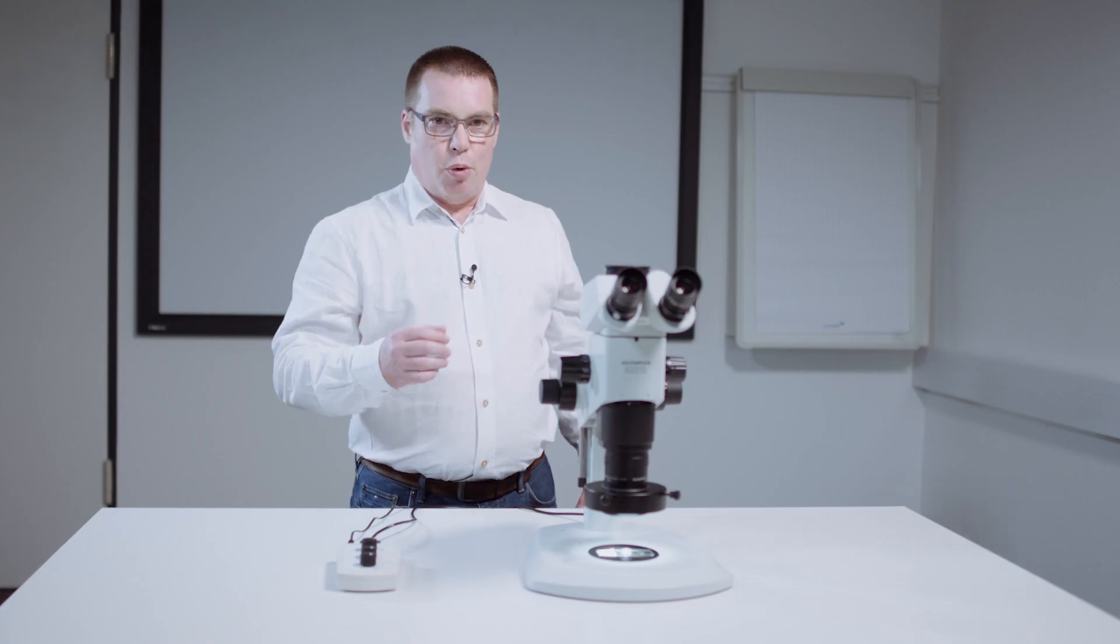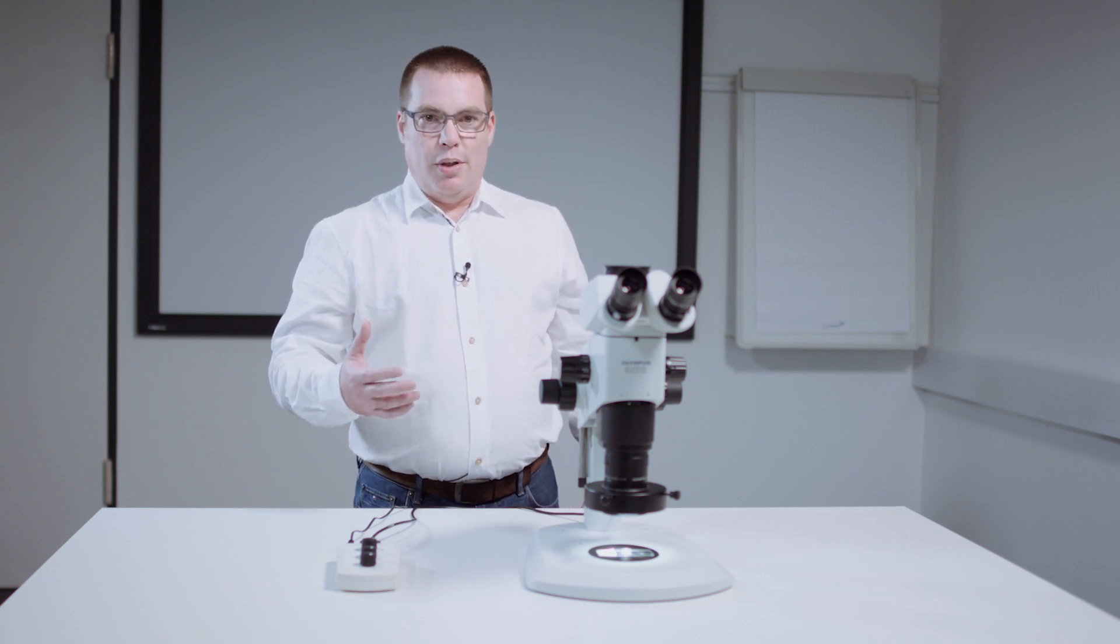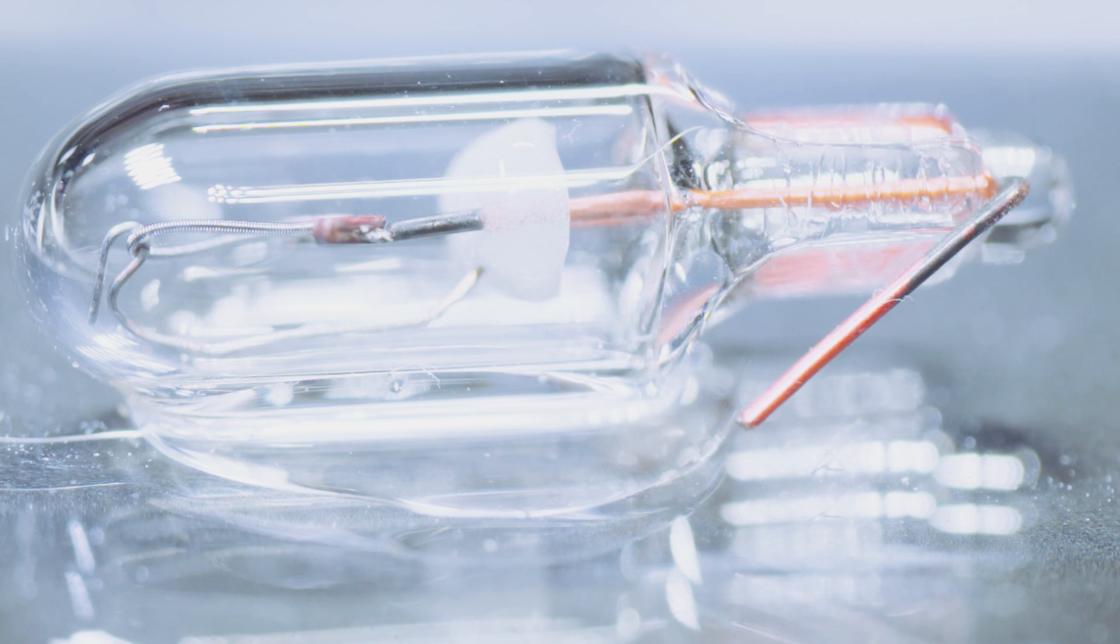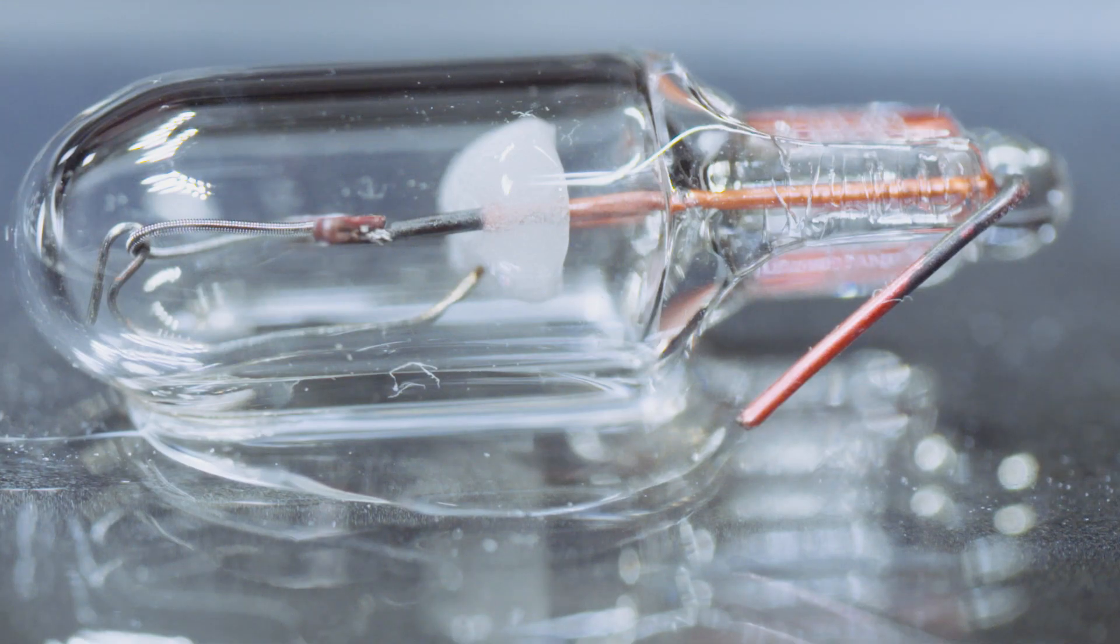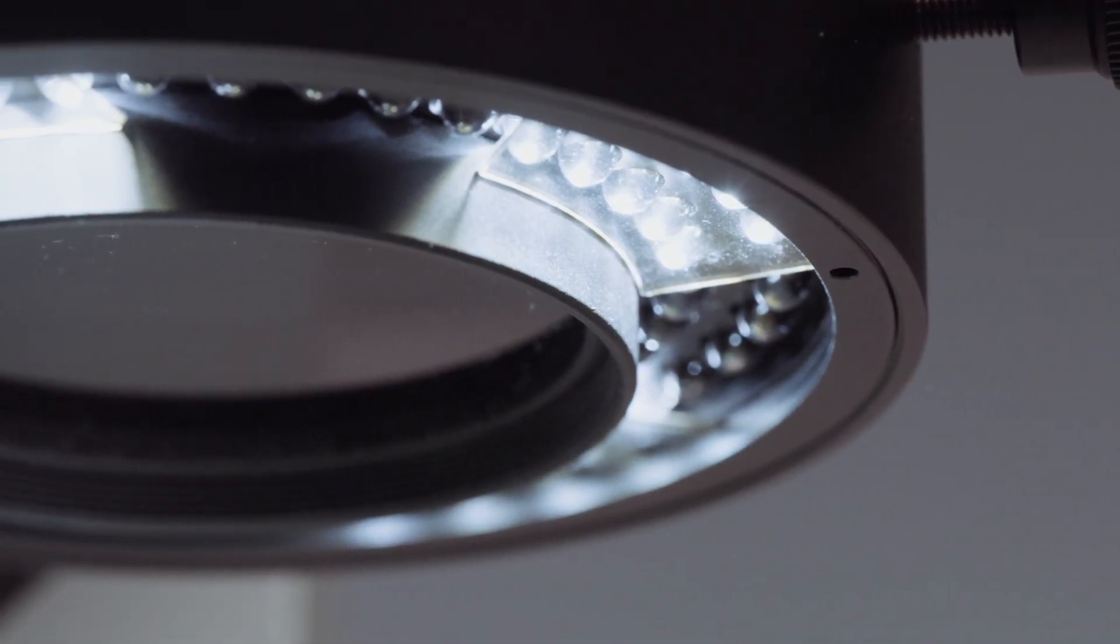The segmented pole set can be used for all processes in which the sample must be inspected both in Bright Field and in Polarization. The segmented pole set is the solution of choice, especially where an automatic change between these two observation methods is required.